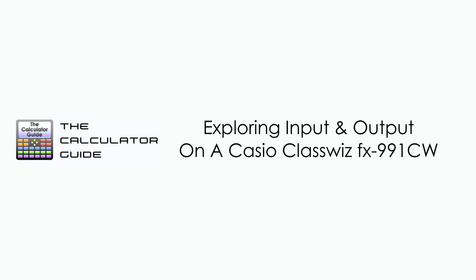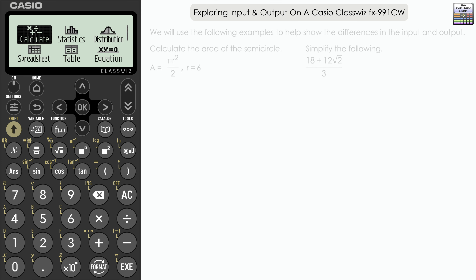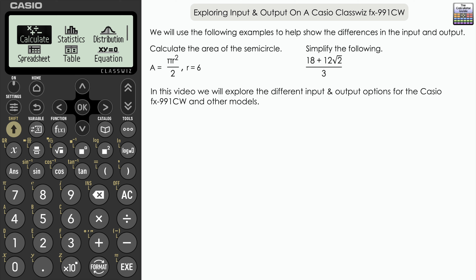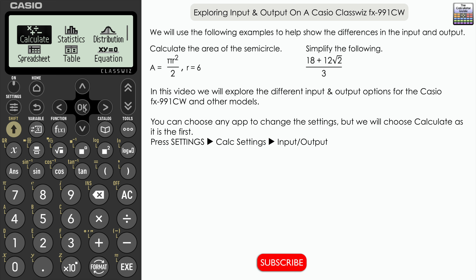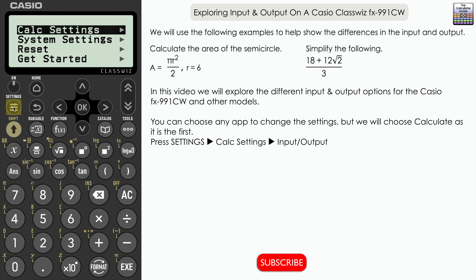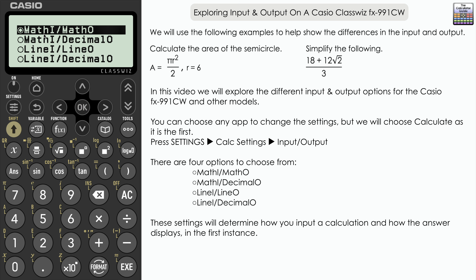Hello and welcome to the calculator guide video on exploring input and output on a Casio ClassWiz FX991CW. We're going to be exploring how the different input and output options affect the way your answer appears. We're going to be using examples here to highlight the differences in the way that the answer is presented. In calculate, we're going to go to settings, then calc settings, and then the top option: input output. We have four different available options to determine how we input information and how it initially gets displayed as the answer.